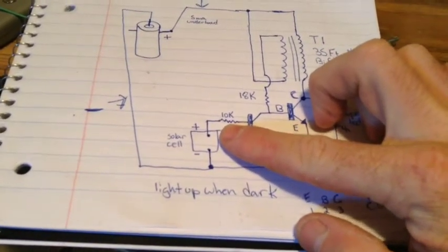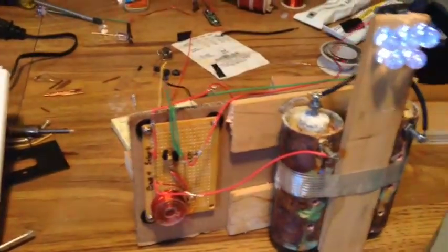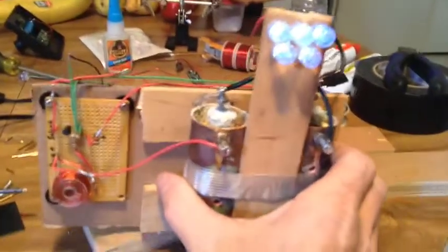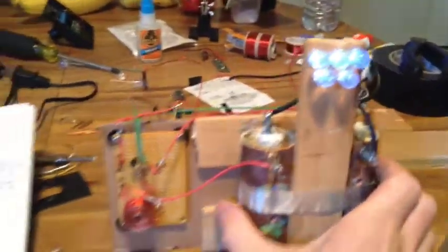If I had a resistor here, when I put the solar lights into the sun, the lights would dim, but it wouldn't go all the way to ground. So without that resistor, when we go to the light, it goes to ground and they shut off. So there is the Bendini Earthlight.